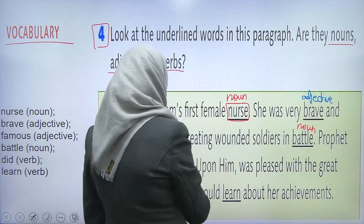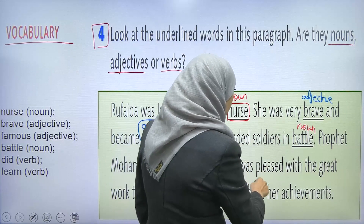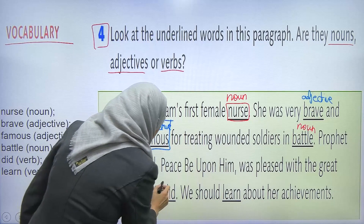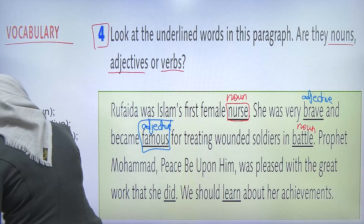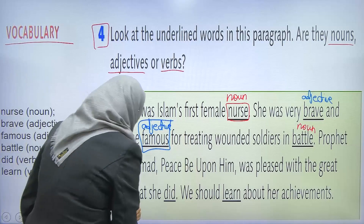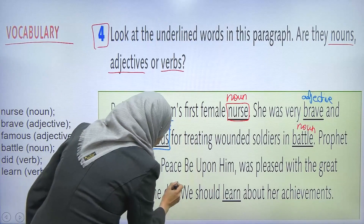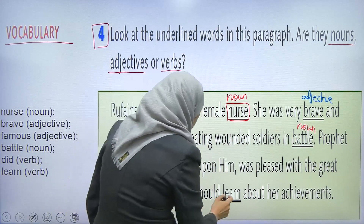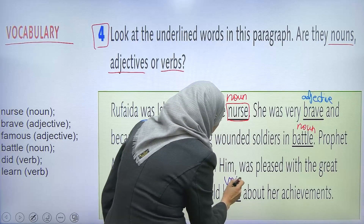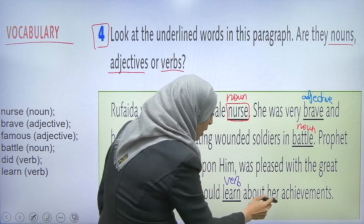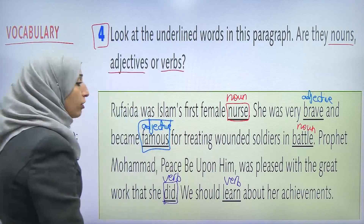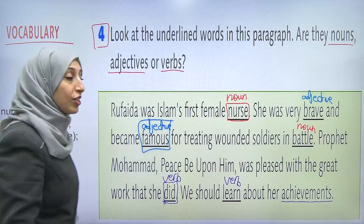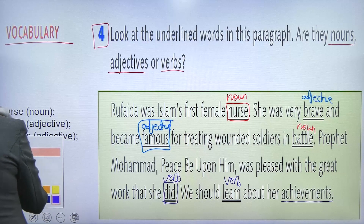Prophet Muhammad, peace be upon him, was pleased with the great work that she did. What about 'did'? Did is a verb. I will choose the purple one to write the word verb. And we should learn. 'Learn' is also a verb, about her achievements. Achievements also is a noun.